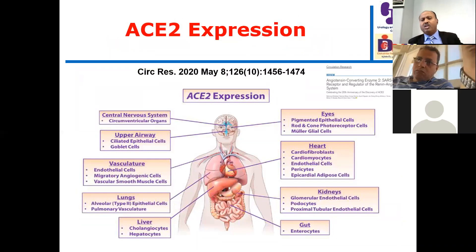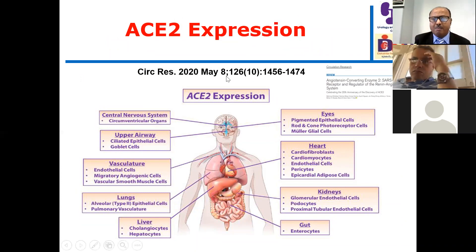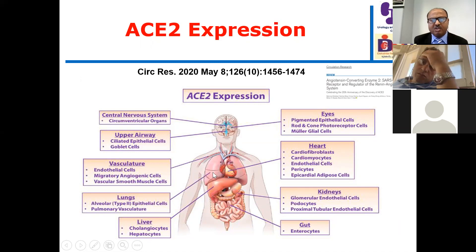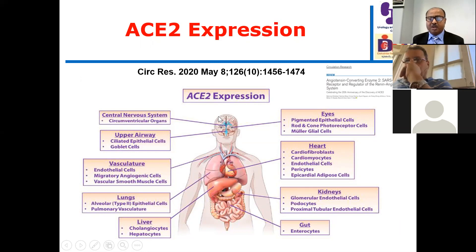Let us revisit ACE2. ACE2, which is protective against angiotensin-2, is expressed all over the body: in the CNS, upper airway, vasculature, and lungs. Increased ACE2 expression in pneumocytes facilitates COVID-19 entry. It is also expressed in the liver, gut, kidneys, glomerular endothelial cells, podocytes, and proximal tubular endothelial cells, where it protects against inflammation and fibrosis.